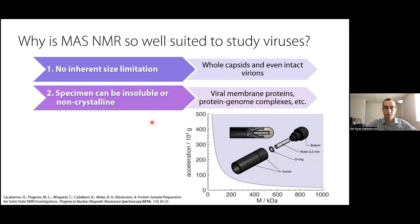Second, we can pack in the MAS rotor almost any solid — it can be powder, hydrated lipids, microcrystalline proteins, and sediments of large biological assemblies. For biological assemblies on the megadalton scale, it is relatively simple to just sediment them straight into the MAS rotor, enabling a relatively easy way to study them by magic angle spinning NMR and to achieve high resolution spectra as well.